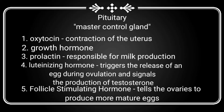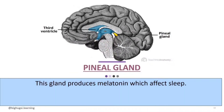Oxytocin is involved in the contraction of the uterus. There is also growth hormone. Prolactin is responsible for milk production. Luteinizing hormone triggers the release of an egg during ovulation and signals the production of testosterone in males. The follicle-stimulating hormone tells the ovaries to produce more mature eggs. Next is the pineal gland, which produces melatonin, which affects sleep.